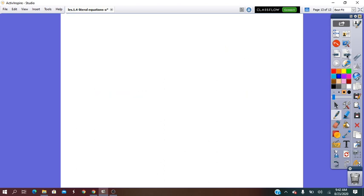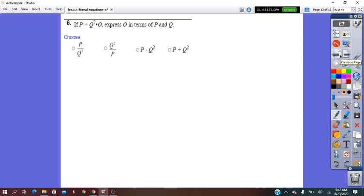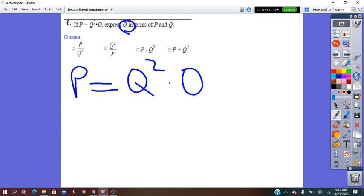Let's try more. If p equals q squared times o, express o. This means we have to solve for o. What is o? So we look for it. In left of equals, there is no variable o. But in right of the equals, we see the o here. And because it's times, the o is a factor.